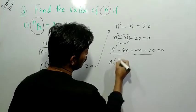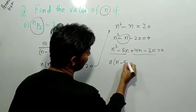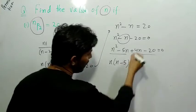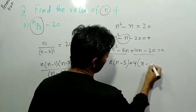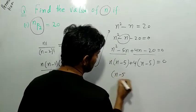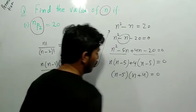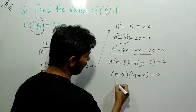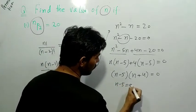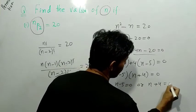Now we will take n common outside. So friends, the factor we are getting is n minus 5, and here plus 4, so friends it becomes n minus 5. Our factor came as n minus 5, and second is n plus 4 equals zero. So friends we will solve this further, and how will it be? n minus 5 equals zero or n plus 4 equals zero.